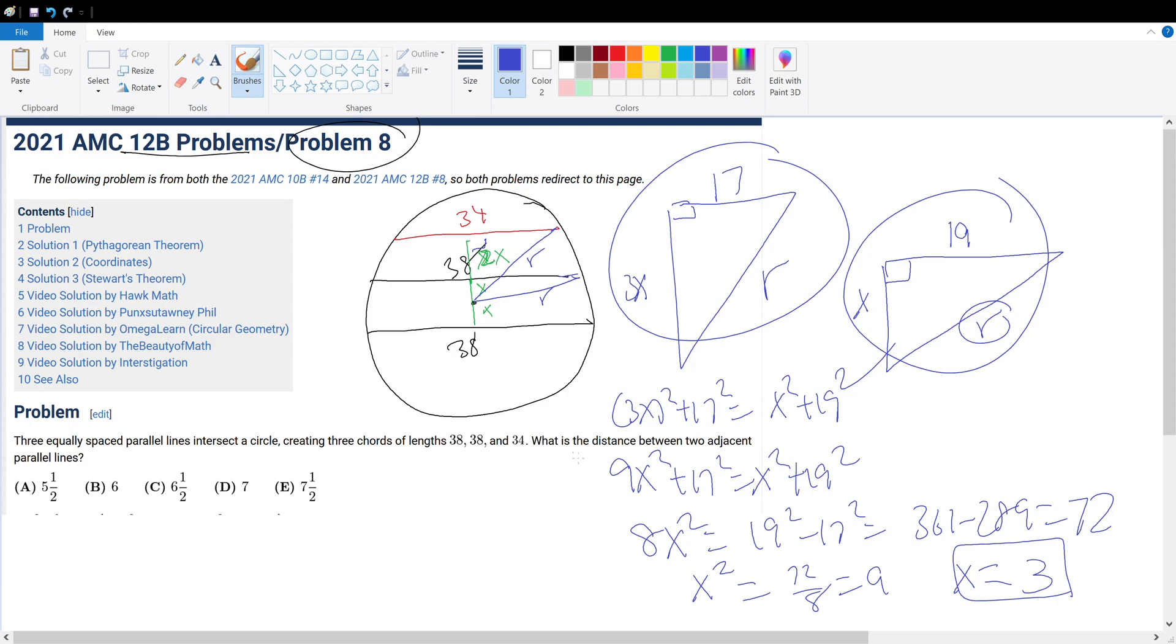So x is 3, but they want us to find the distance between two adjacent parallel lines, and the distance between two adjacent parallel lines, we have to find this as 2x. So 2x with x equals 3, so that is 6, or answer choice B.